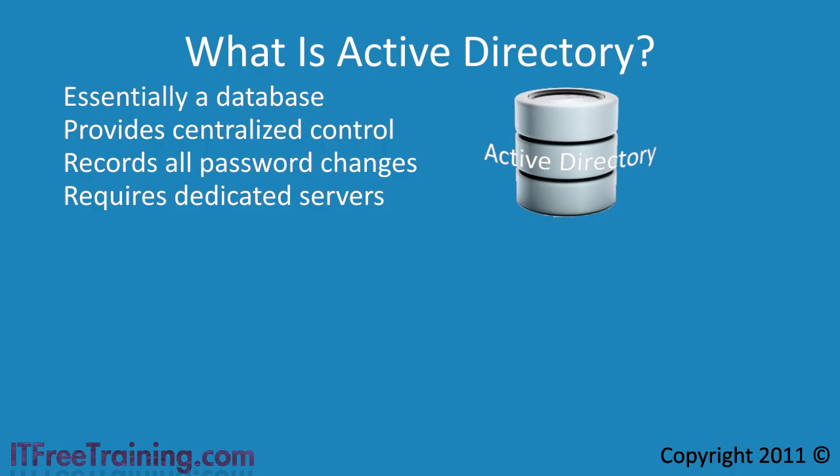If you have a small home or business network, Active Directory would be overkill for your needs. If you are using a pure Windows 7 network at home, you may want to consider using Home Group rather than installing products such as Active Directory. Home Group allows computers to access each other's resources on the network using one password, and is good for home users who don't require large systems such as Active Directory to share some files or printers.